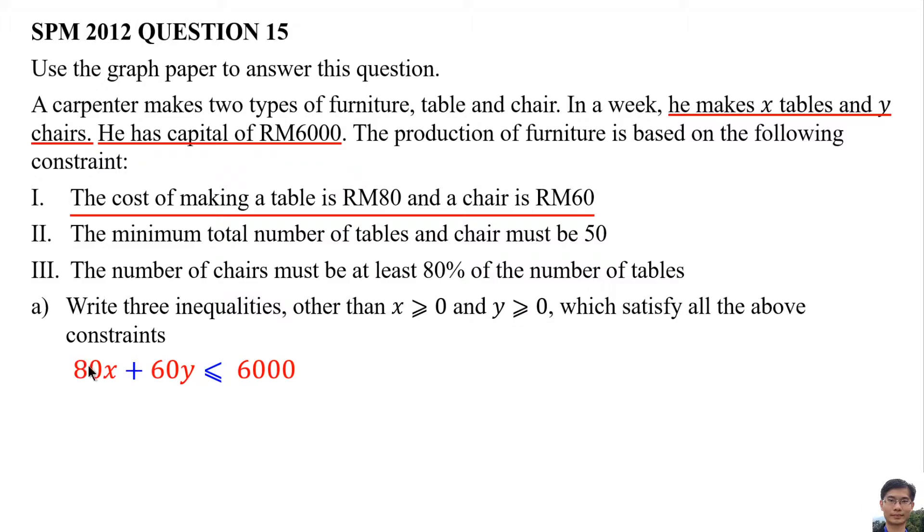80 times X means the cost of making X tables. 60Y means the cost of making Y chairs. The maximum cost of making tables and chairs is RM6,000, so the cost of making chairs and tables should not be more than RM6,000. Then we simplify the inequality.